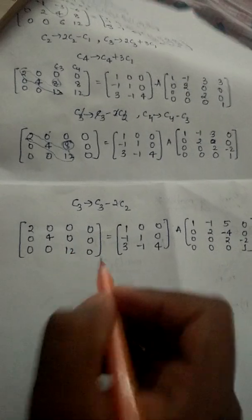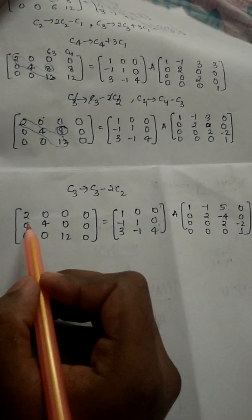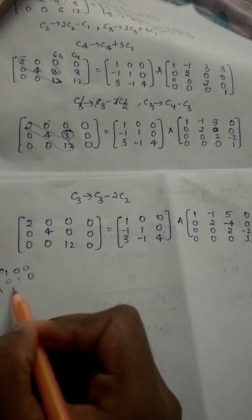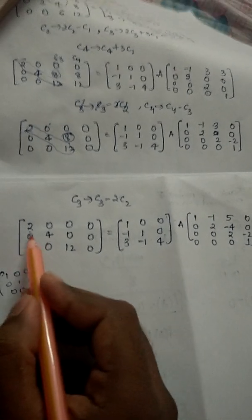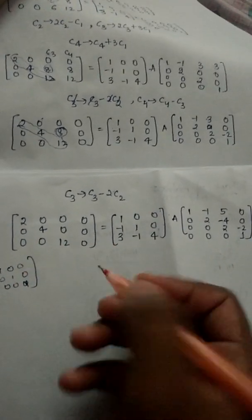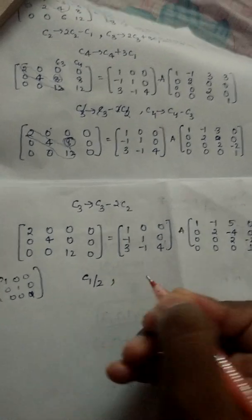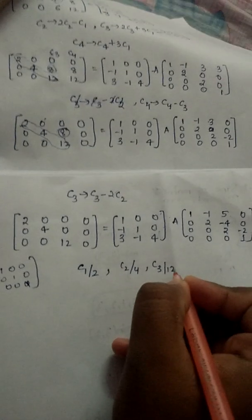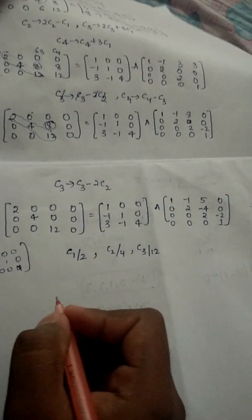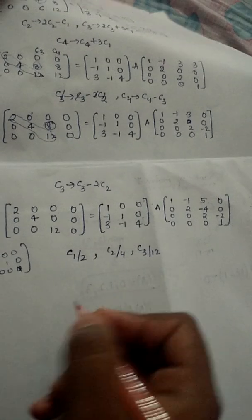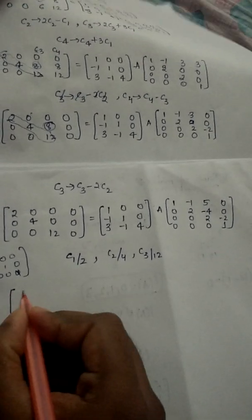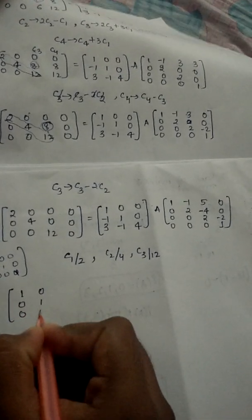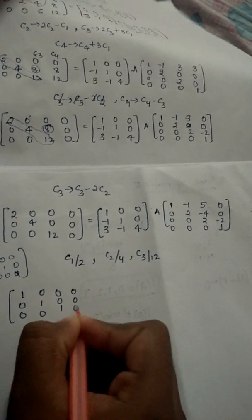The diagonal matrix should now have elements 1 on the diagonal. To achieve this, we divide: Column 1 by 2, Column 2 by 4, and Column 3 by 12. After these operations the matrix becomes the identity-like form [1,0,0,0; 0,1,0,0; 0,0,1,0] — the 3×4 normal form.